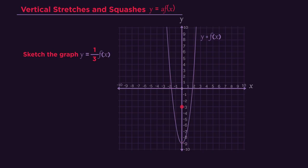Negative 9 moves to negative 3. Negative 6 goes to negative 2. 3 goes to 1, and you'll end up with your transformed graph. So y equals a third f of x would be squashed vertically by a third.